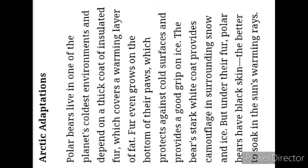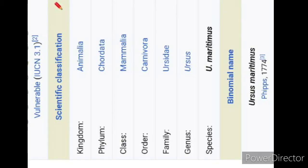Fact number six: polar bears can smell their prey up to a kilometer away. They have a very strong sense of smell, which they use to find seal breathing holes in the ice. Once a hole is found, the bear will wait patiently until the seal comes up for air to attack. They can even detect a seal beneath a meter of compacted snow.